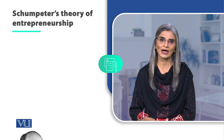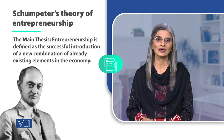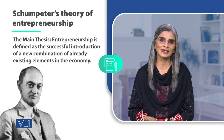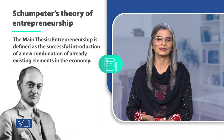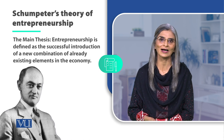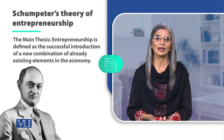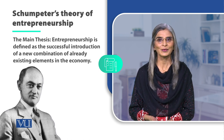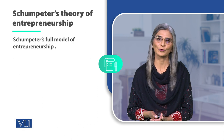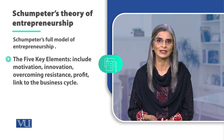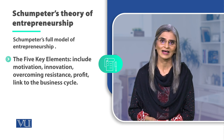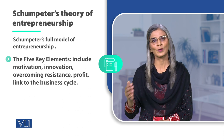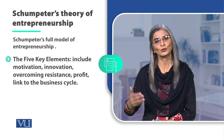In Schumpeter's model, we will remember that we have talked about innovation, or doing things differently, which can increase entrepreneurship. The main thesis has been linked to resistance, profit, and the business cycle. In this session, we will relate these five components to Schumpeter's contribution to social entrepreneurship.